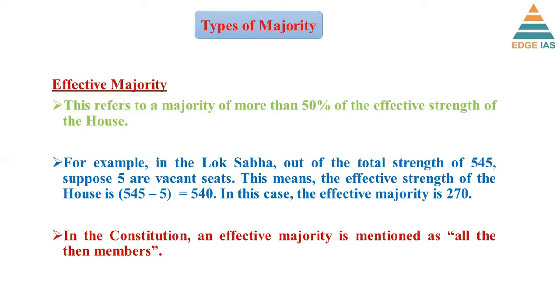In case of simple majority, it is present and voting. In case of absolute majority, it is total. And in the case of effective majority, it is more than 50% of the effective strength of the house.